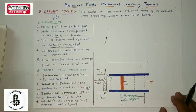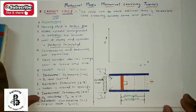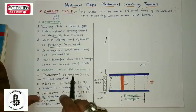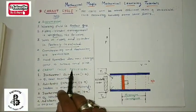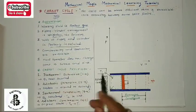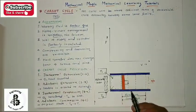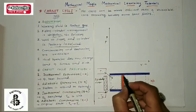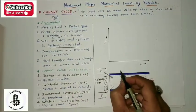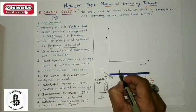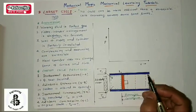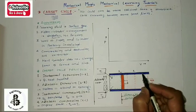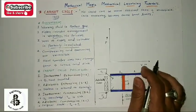In a Carnot cycle, basically four processes are going on. The first one is an isothermal expansion process, which generally occurs from point 1 to point 2. You can see the initial position to point 2 from the diagram.